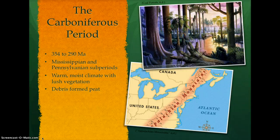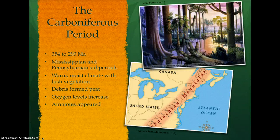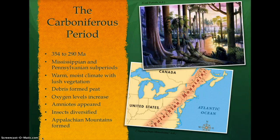The mass vegetation present removed huge amounts of carbon dioxide from the atmosphere, creating an abundance of oxygen. The first amniotes appeared with self-contained embryonic environments. Insects diversified and some developed wings. The Appalachian Mountains formed in the late Pennsylvanian subperiod when Africa collided with eastern North America.